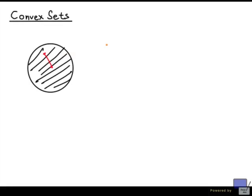Here's an example of a set that is not convex. The reason is if you pick these two points over here, the line segment between them is this, and you can see that there are points that are not in the set. So this is not convex.